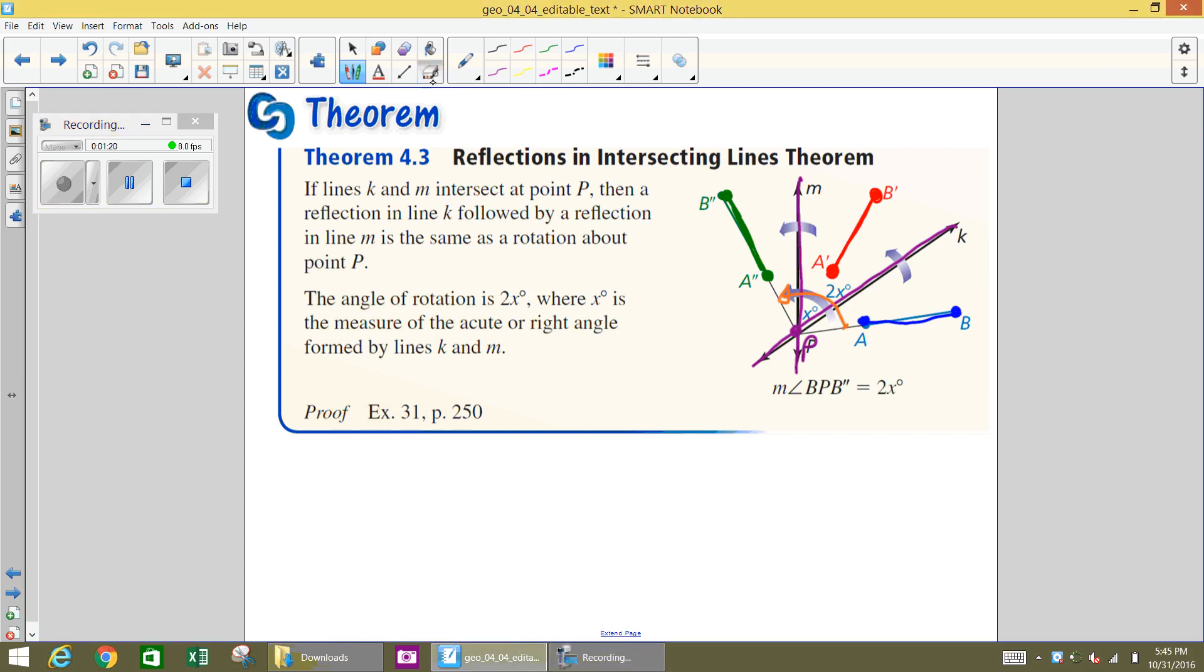So what does that mean for angles and angles of rotation? Well, let's look at that. If we're talking about that, then it says the angle of rotation, so from moving AB all the way to A''B'', that is what's 2X, where X is the measure of the acute or right angle that is formed by lines K and M, or their intersection. So that means that where they intersect, this little piece right here, that is what X is. That's X degrees. And then the angle of rotation from AB to A''B'', that is what is 2X.